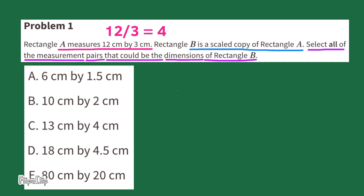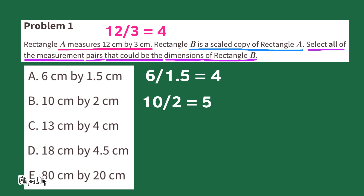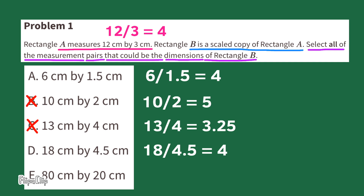Here's another way to determine if a rectangle is a scaled copy without actually drawing it. Take the dimensions of the first rectangle, 12 by 3, and divide 12 by 3 — that equals 4. Now do the same with the rest: 6 divided by 1.5 equals 4; 10 divided by 2 equals 5; 13 divided by 4 equals 3.25. Anything that doesn't equal 4 is not a scaled version of Rectangle A. 18 divided by 4.5 equals 4, and 80 divided by 20 equals 4. So again, A, D, and E are all scaled versions of Rectangle A and could be Rectangle B.